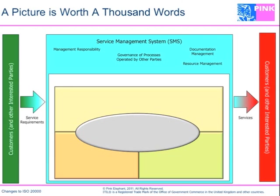Resource management focuses on human resources, combining elements of competence, awareness, and training from the old standard, with a fair amount of additional information. There is also the need to establish the SMS tied back to the Deming lifecycle — plan, do, check, act — with great detail on expectations for how the service management system itself should work, cycling through the Deming cycle.